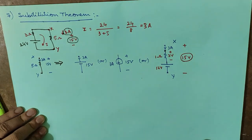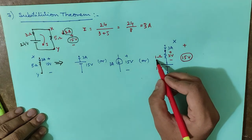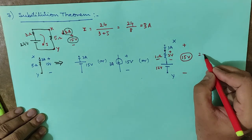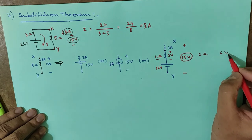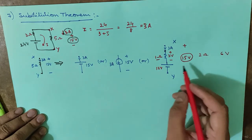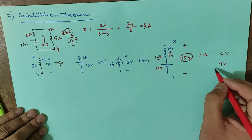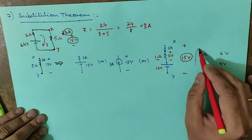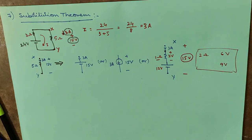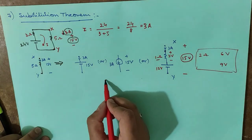Similarly, if the resistance is 2 ohms, then 6 volts drops across it, so the battery should be 15 minus 6 equals 9 volts. In every case, the current passing through the branch must remain 3 amperes and the voltage across the branch must remain 15 volts.